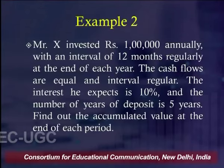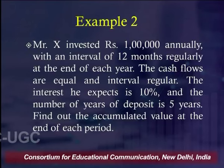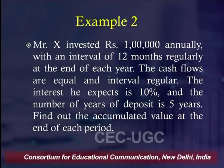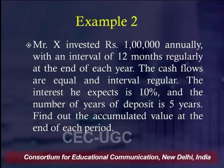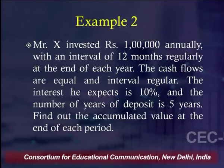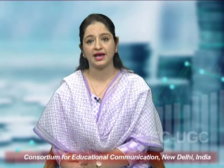Let's understand future value of annuity using an example. Mr. X invests rupees 1 lakh annually at the end of each year — equal and regular cash flows — for 5 years at 10 percent interest. We need to find the accumulated value at the end of the period. So our annuity is 1 lakh, N = 5 years, and I = 10 percent.